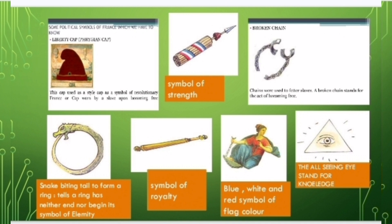You can also see a broken chain, which is a symbol of freedom from slavery. On the right side there is a snake with its tail in its mouth, which is a symbol of the continuous running of the revolution system. Next, a stick-like symbol is there representing royalty, and again the blue, red and white dress can be seen.